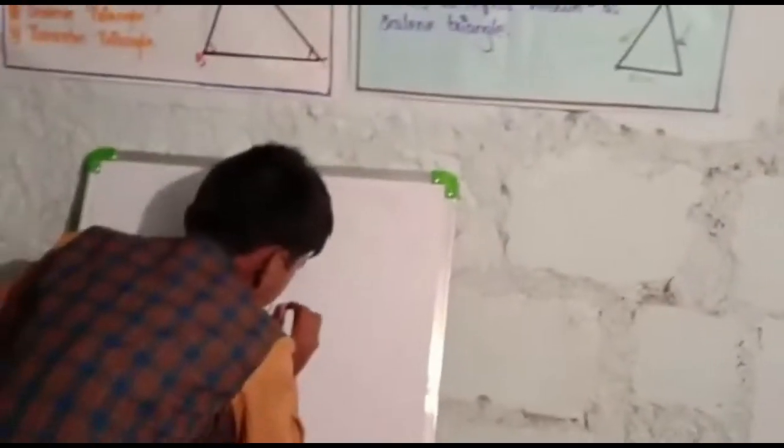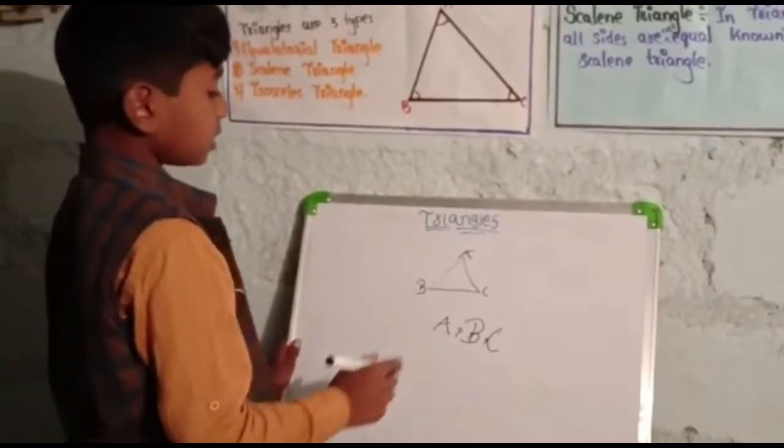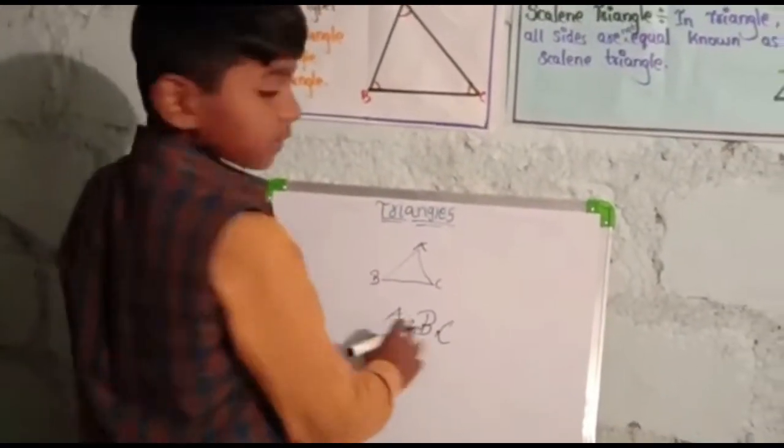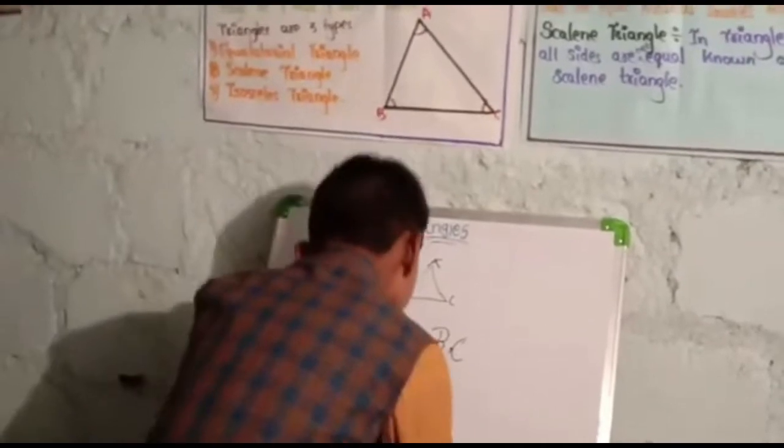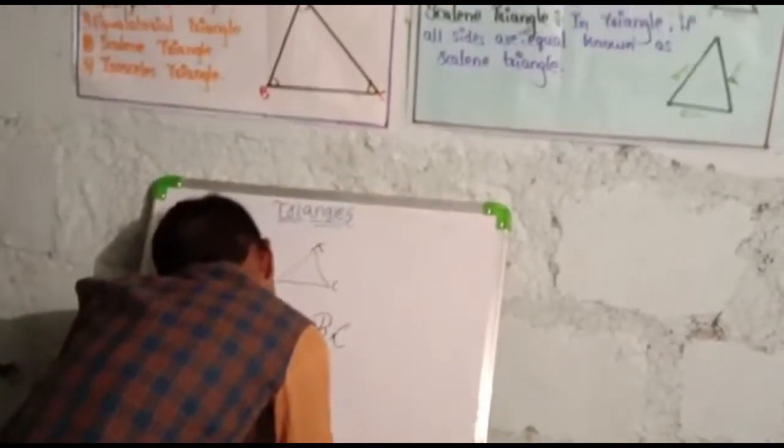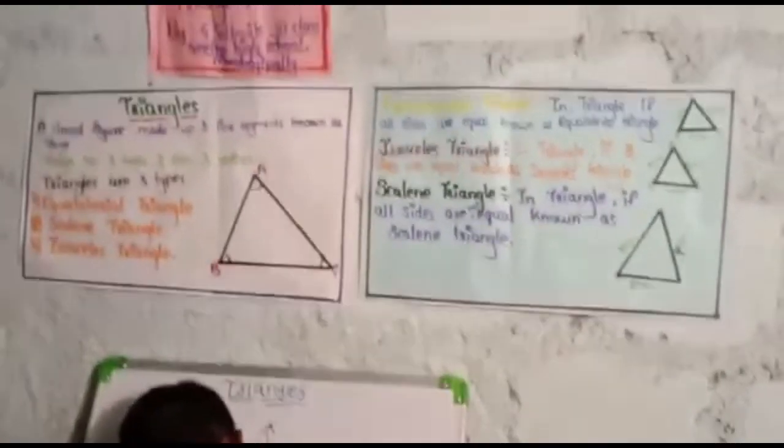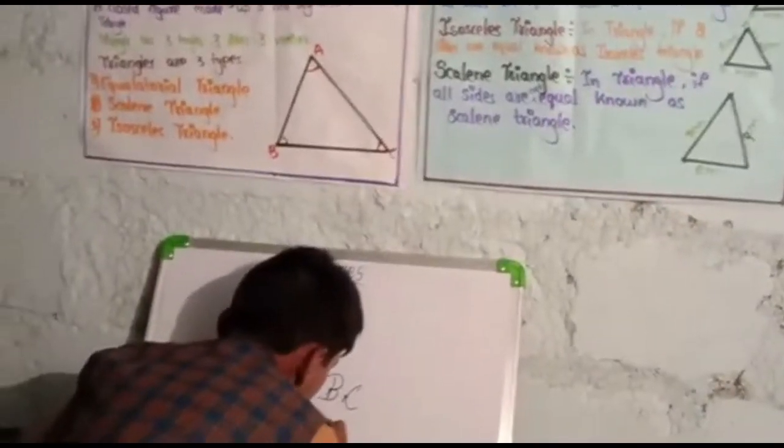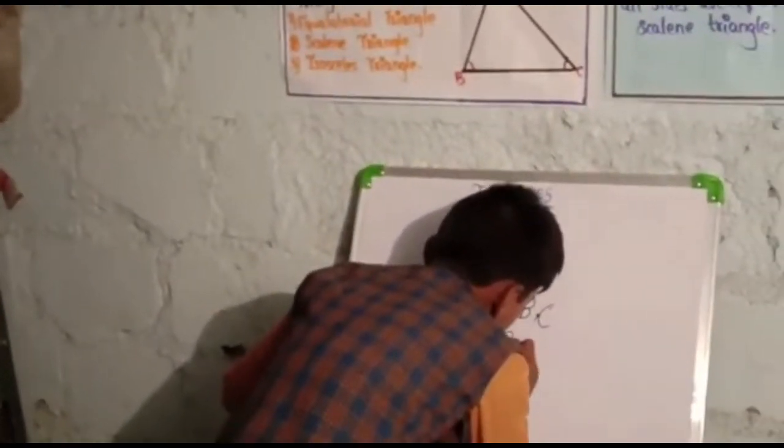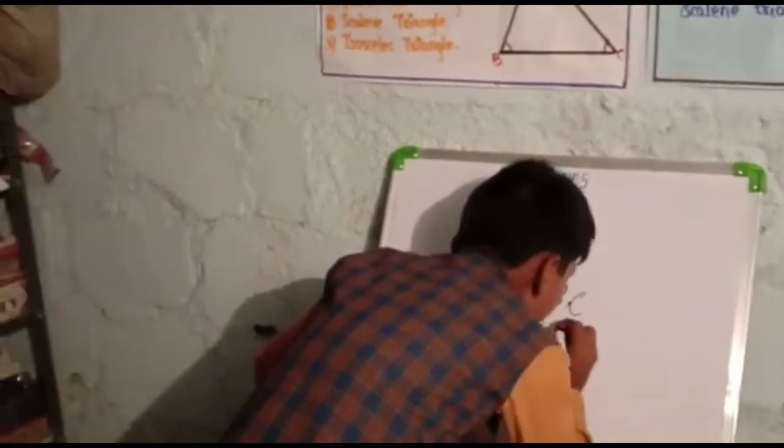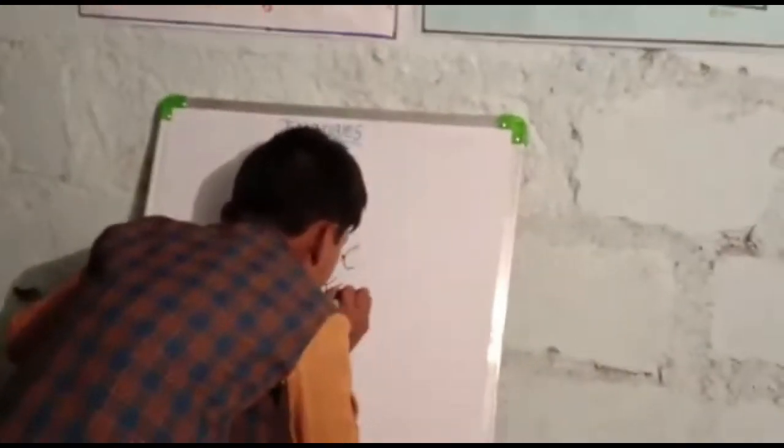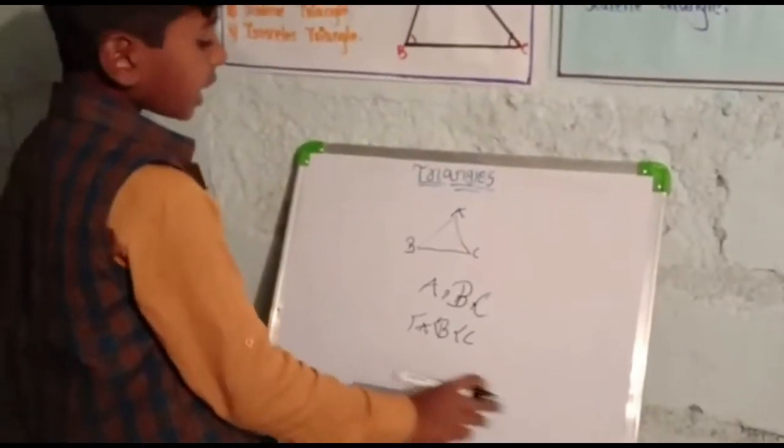C, this is a triangle. This has three vertices. Angle A, Angle B, C. These are three angles.